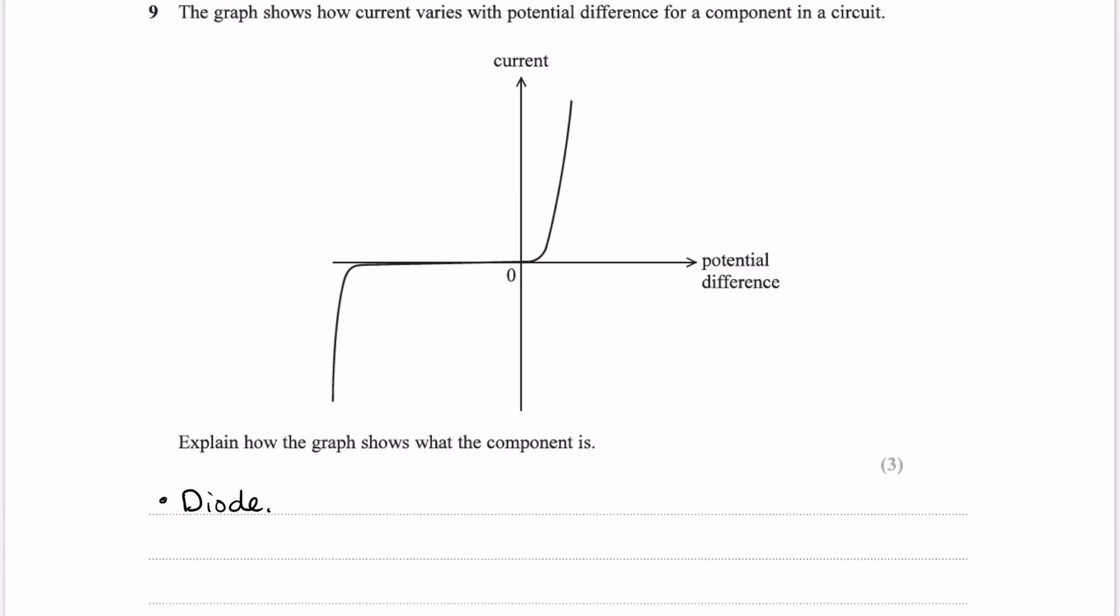And so if we were to describe some of those other features, we have the threshold voltage, which is about 0.7 volts. That's when you will have the resistance of the diode decreasing significantly once you pass that 0.7 volts, and you have the current beginning to then increase.